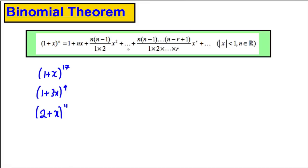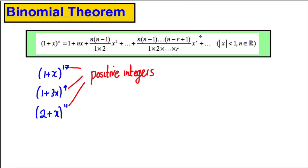So far, we have used the Binomial Theorem for positive integers. What that meant, looking at the expansion formula, is that at some point you will eventually reach your last value — for example, x to the 17th — and you will stop; there will be nothing after that. It will be a terminating sequence. Also, this coefficient, because of the way you're subtracting, will eventually become zero, so there will be no terms after it.